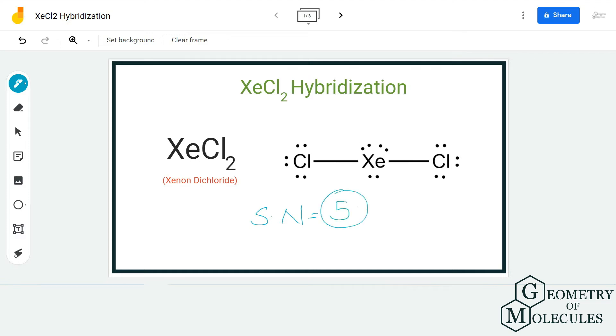Here we are considering the central atom as xenon. It has two bonding pairs of electrons as you can see, and there are three non-bonding pairs of electrons, so the steric number becomes 5.